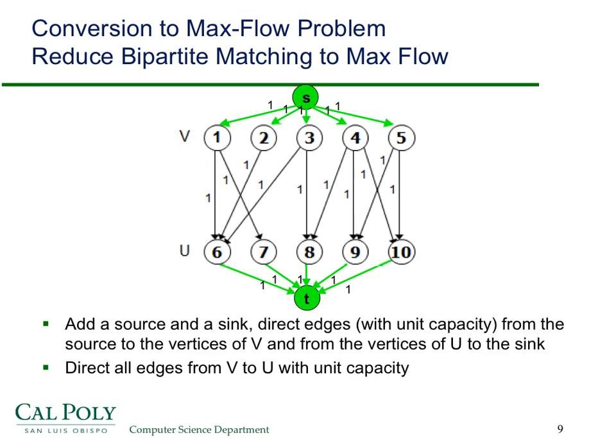Then we can just run the shortest augmenting path algorithm on this flow network and determine the max flow. And from the values of the Xij, we can tell which edges from V to U have a flow of one on them. And that will give us the maximum matching. How do we know it's the maximum matching?